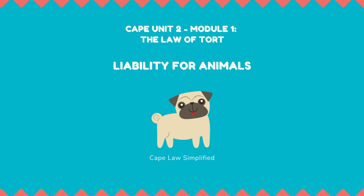For a ferae naturae animal, it is irrelevant whether or not the particular animal has shown a propensity for that kind of harm in the past, or that the accident occurred due to circumstances beyond the keeper's control. However, the owner or keeper of an animal mansuetae naturae is liable for harm caused by the animal only if: A) that particular animal has shown a propensity in the past to do harm of that kind, and B) the owner or keeper is proved to have had knowledge of such propensity.